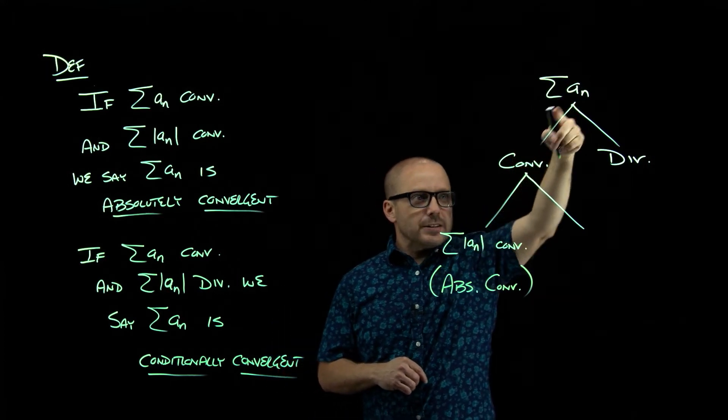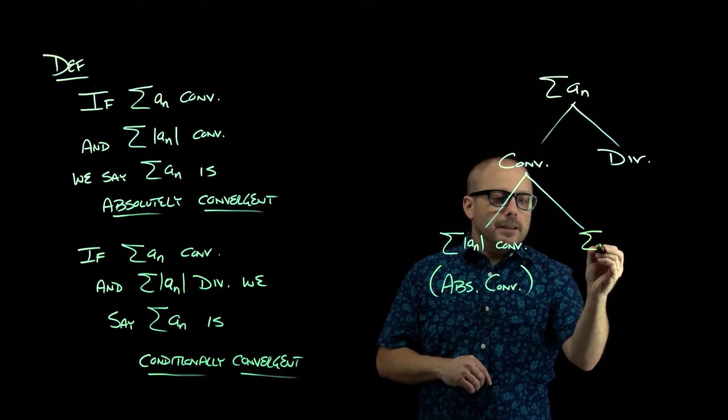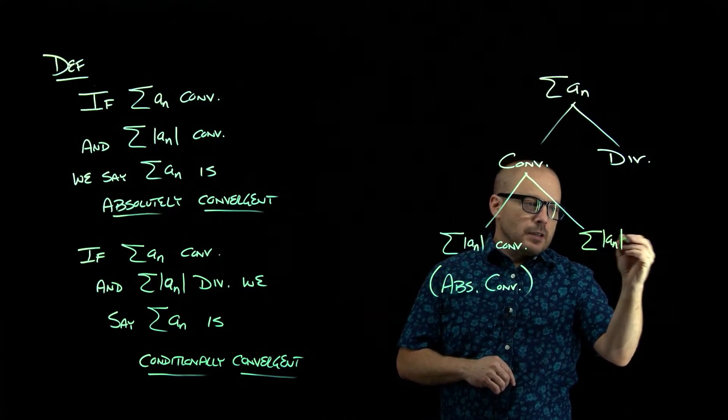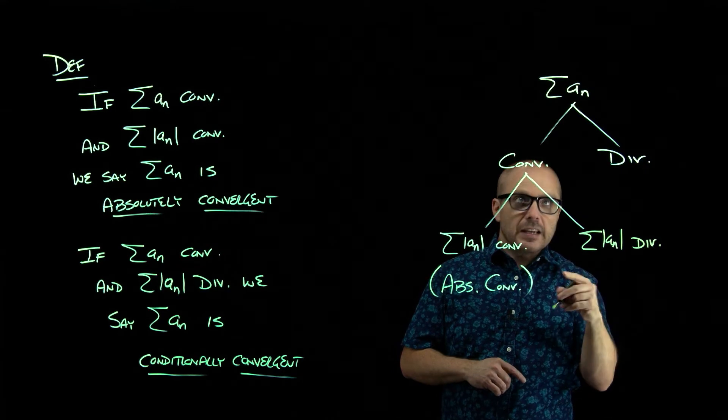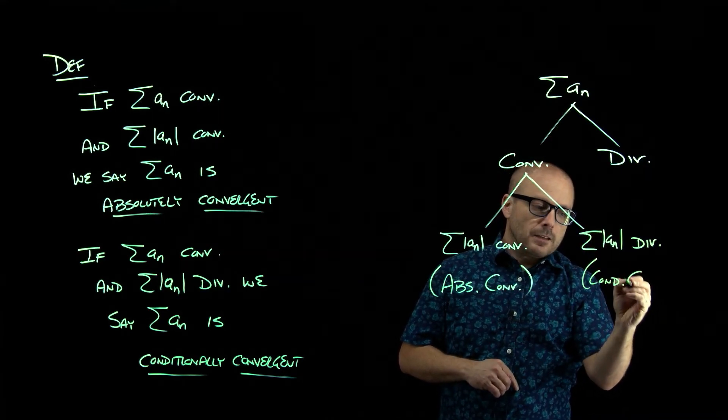In other words, we're saying this series not only converges, it converges absolutely. If you take the absolute value of the series, those terms, and this is divergent, then we say that our series is conditionally convergent.